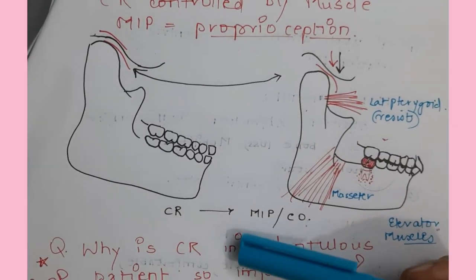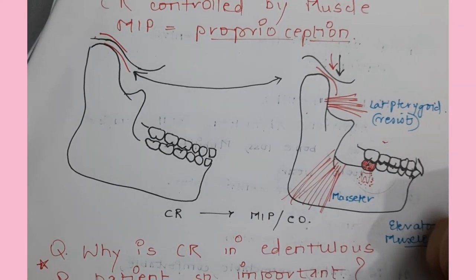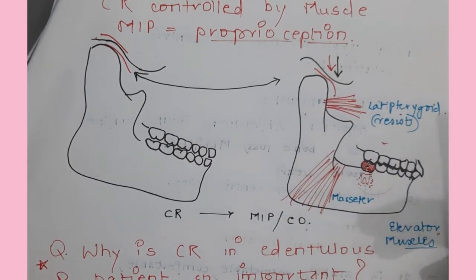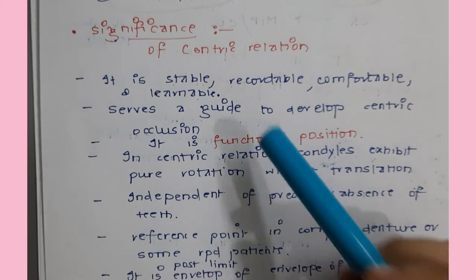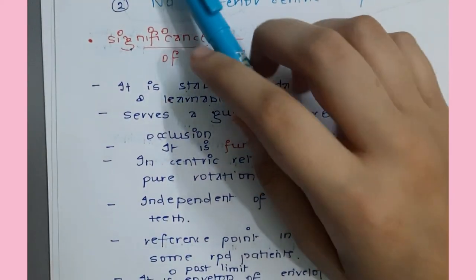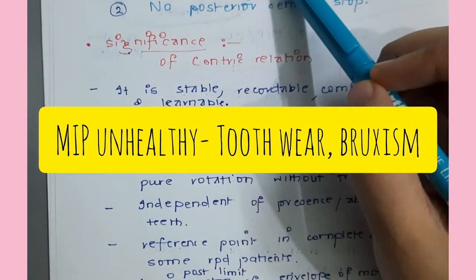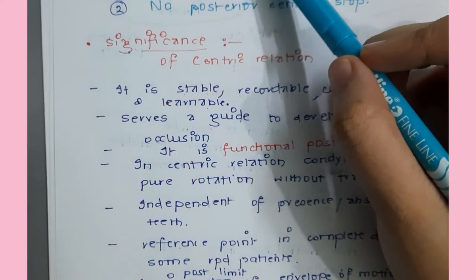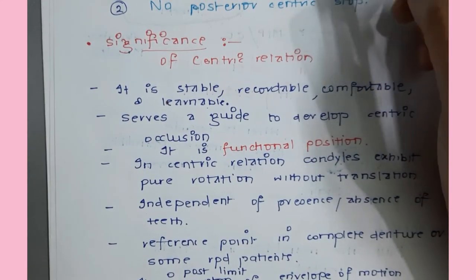In dentulous patients, centric relation may or may not coincide with maximum intercuspation. Whenever we chew food or swallow, there is maximum intercuspation between our teeth - so there is this centric relation-to-maximum intercuspation transition going on. When maximum intercuspation is unhealthy - massive bone loss, multiple teeth missing, mobility, tooth wear, attrition, abrasion, tooth surface loss - we have to work in centric relation. Also when there are no posterior centric stops, we work in centric relation.